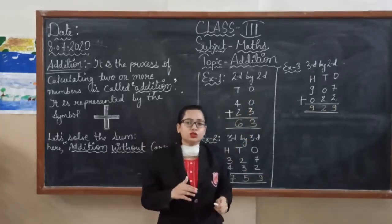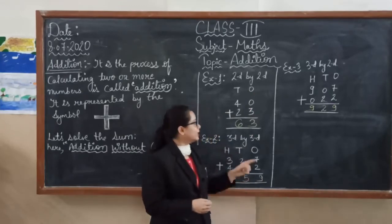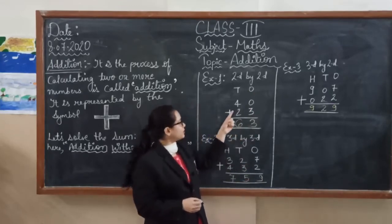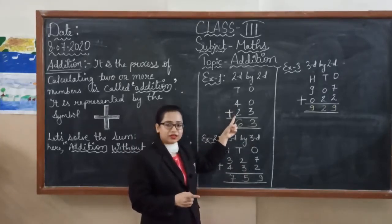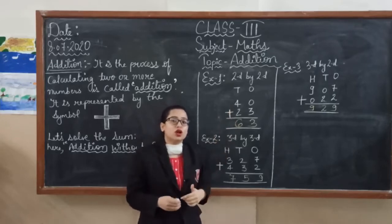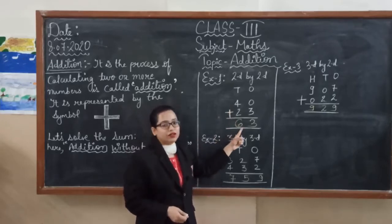When we add zero to any number, we will get the number itself. That's why we are writing three. And next number four plus two. After four, two more numbers. Four plus two, five, six. So sixty-three is our final answer.